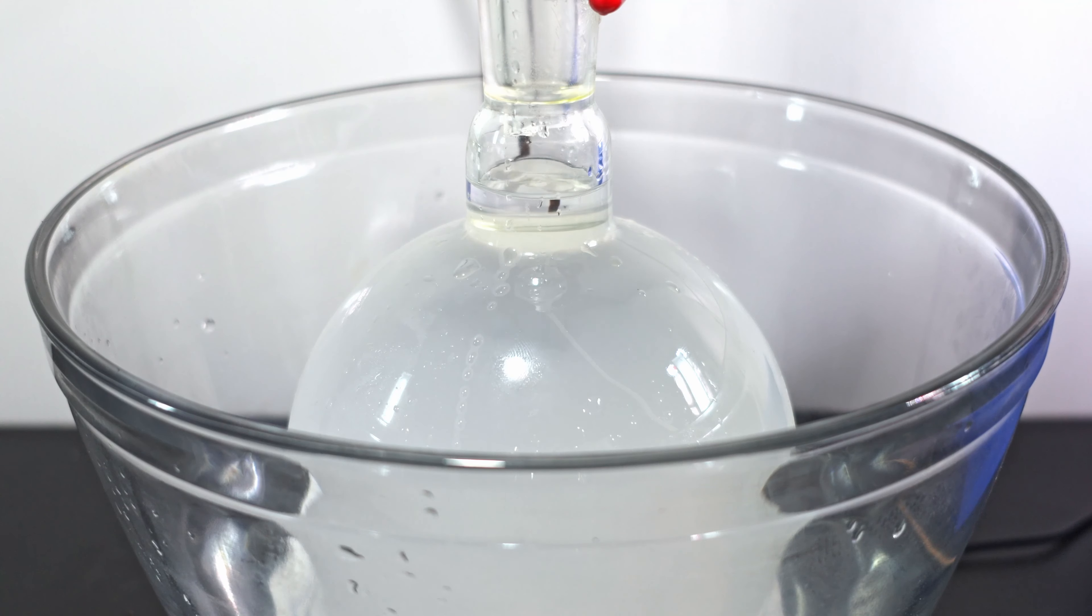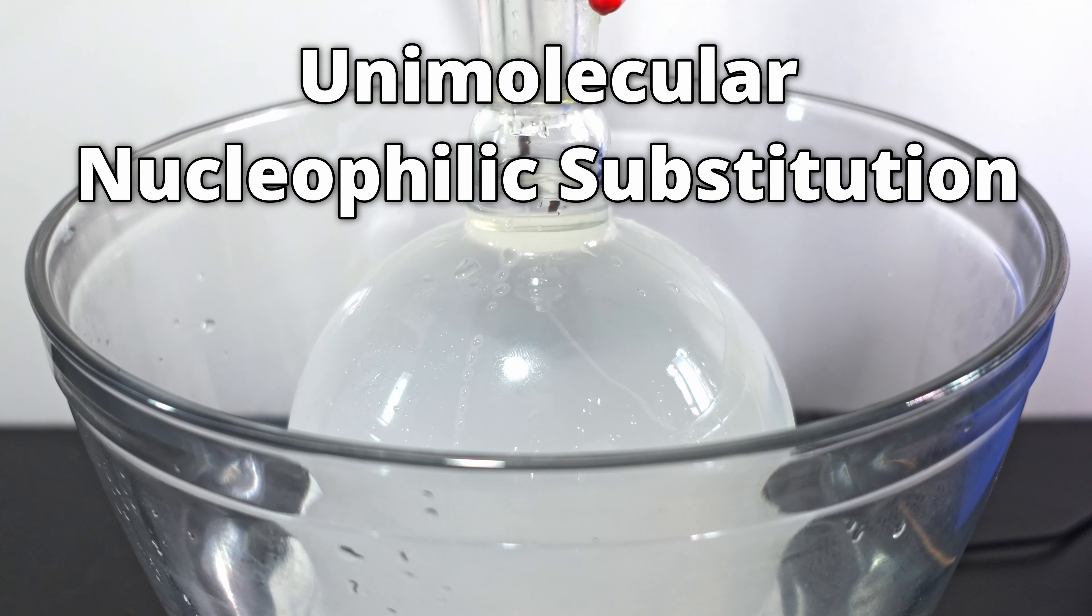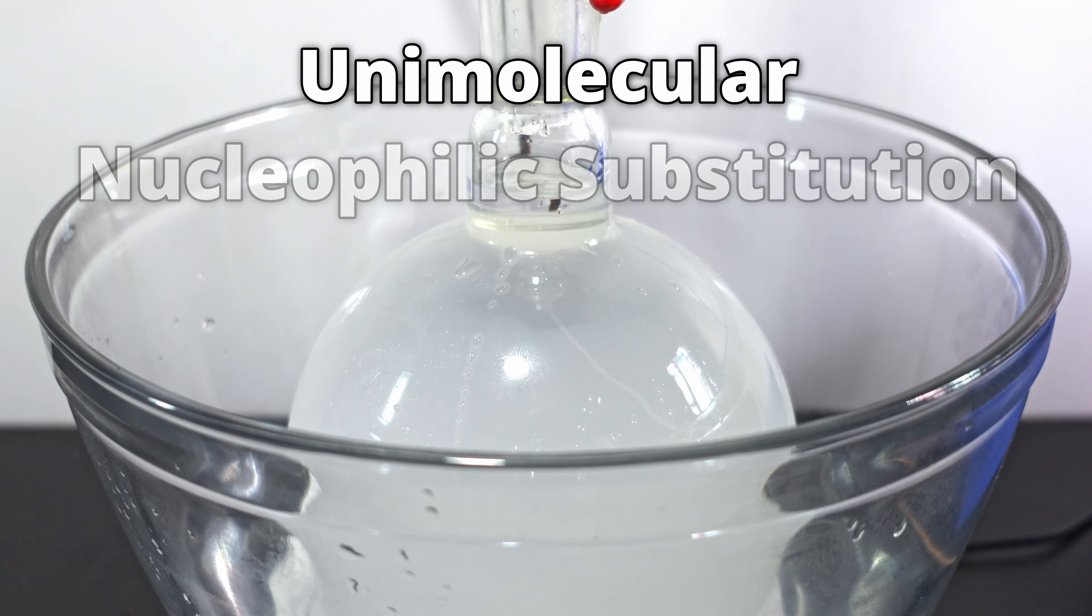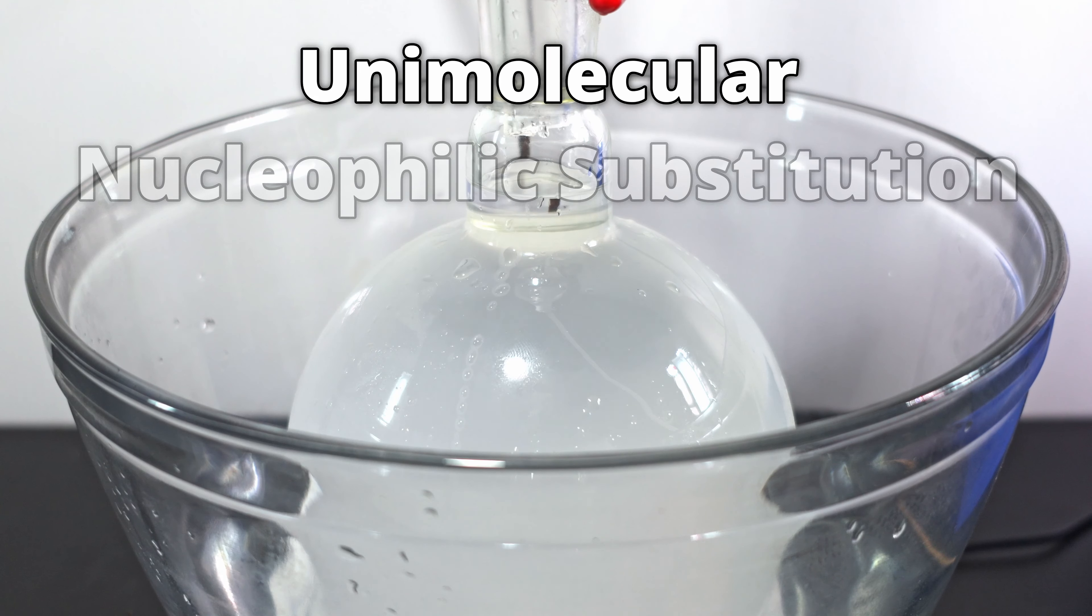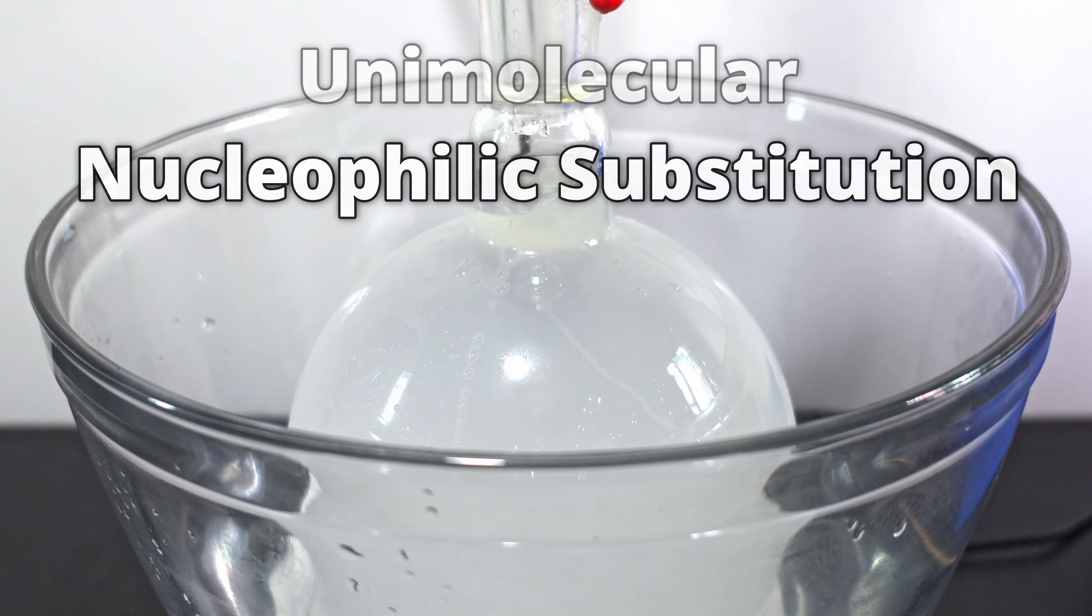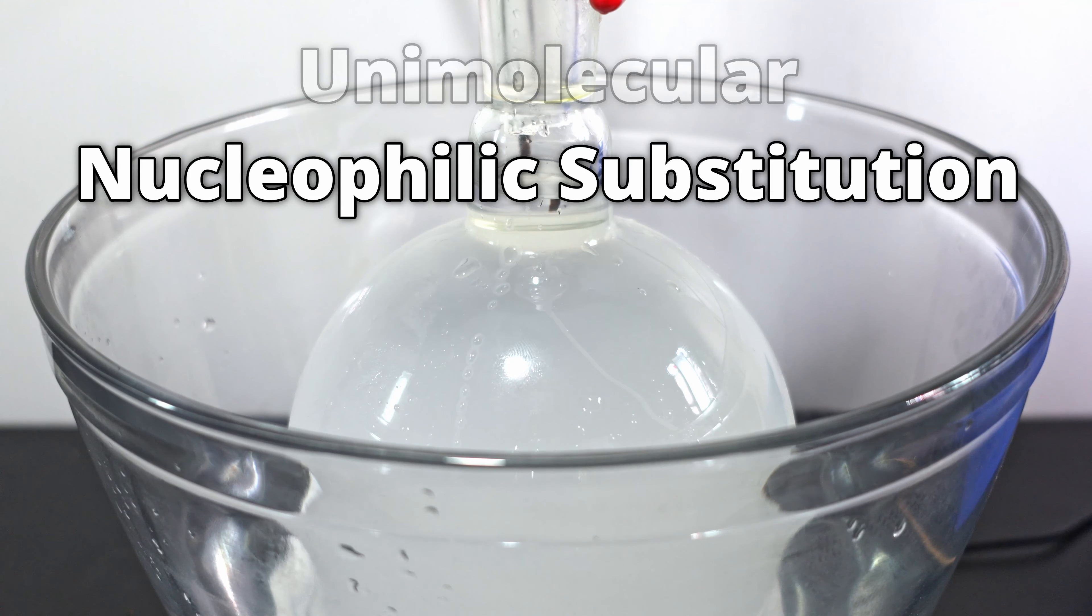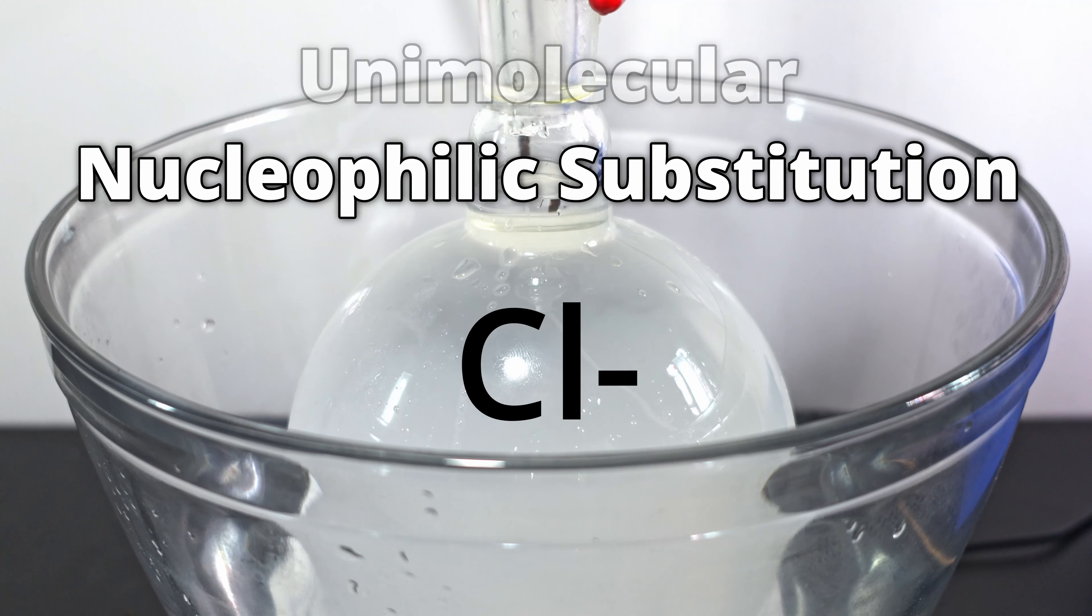What's happening in this flask is an SN1 reaction, or a unimolecular nucleophilic substitution. Big word, I know, so let me break it down. The unimolecular means the reaction rate is only affected by the amount of one reactant, in this case tert-butanol, as it is the molecule being transformed. Nucleophilic substitution means a negatively charged species, in this case the chloride ion, displaces a lesser charged species, in this case water.